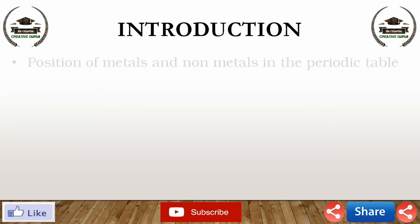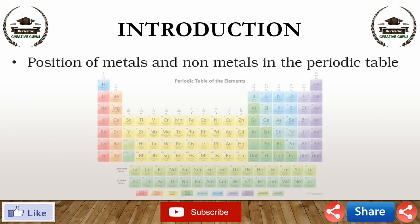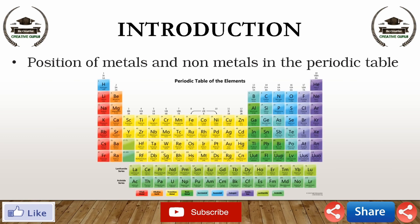Positions of metals and non-metals in the periodic table. The metals are placed on the left-hand side and in the center of the periodic table. On the other hand, the non-metals are placed on the right-hand side of the periodic table, as shown in the figure. Hydrogen is an exception because it is a non-metal but is placed on the left-hand side of the periodic table. Metals and non-metals are separated from each other in the periodic table by a zigzag line. The elements close to the zigzag line show properties of both metals and non-metals. These are called metalloids.